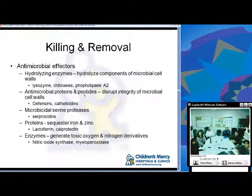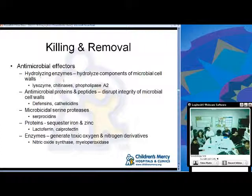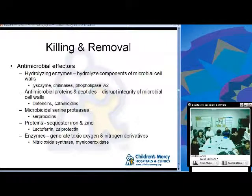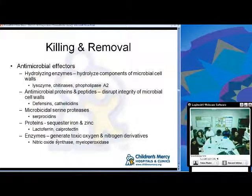The formation of the phagolysosome is calcium-dependent. Within it, pH drops significantly from 7.5 outside to less than 5.5 inside. Once the phagolysosome is formed, killing and removal of the bacterium follows. Antimicrobial effectors include hydrolyzing enzymes that hydrolyze microbial cell wall components (lysozymes, chitinases, phospholipase A2), antimicrobial proteins and peptides that disrupt microbial cell wall integrity (defensins and catholicidins), microbicidal serine proteases (serprocidins), proteins that sequester iron and zinc (lactoferrin and calprotectin), and enzymes that generate toxic oxygen and nitrogen derivatives.